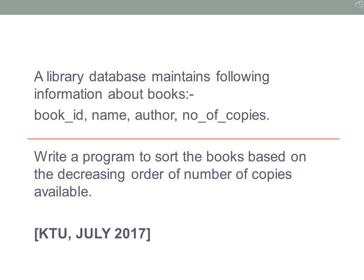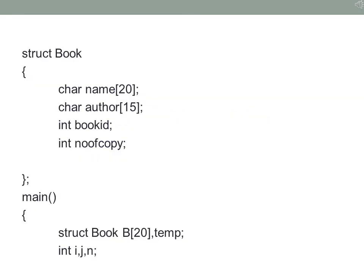The next question is to create a library database with the details of each book: book ID, name, author and the number of copies available in the library. Depending upon the number of copies available, you sort the books in decreasing order. You create a structure book with character arrays for name and author, while book ID and number of copies available are of type integer. In the main program you create an array of structure book b of 20, which can store the details of 20 books.